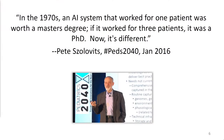This is Pete Solovitz, who's one of the fathers of AI and medicine, at a meeting not too long ago. In the 1970s, an AI system that worked for one patient was worth a master's degree. If it worked for three patients, it was a PhD. Now it's different — if we have labeled data and the right configuration of network, we can build these systems in a matter of weeks.